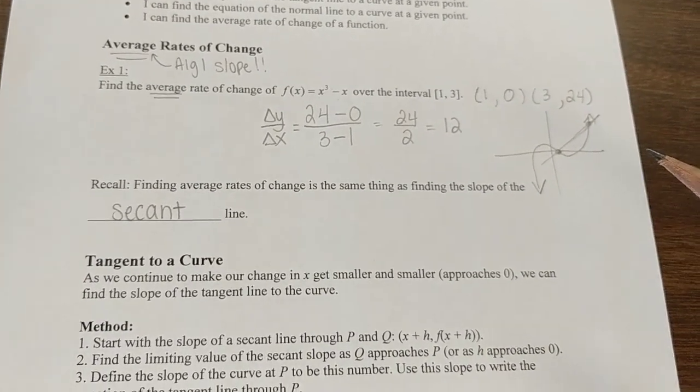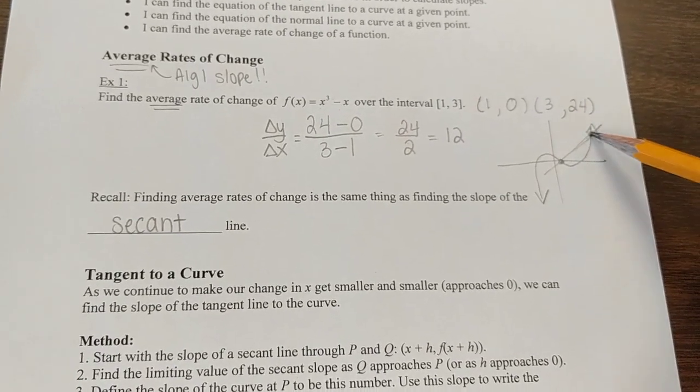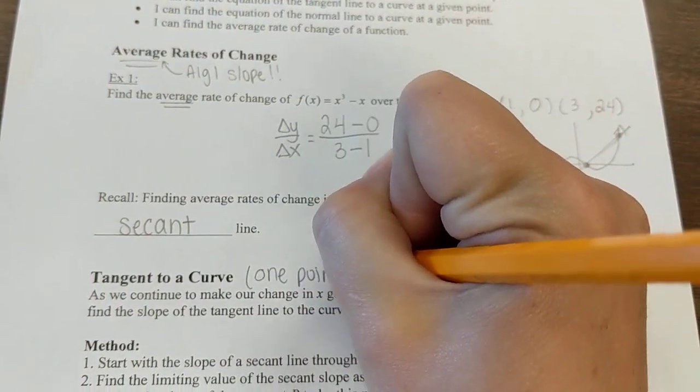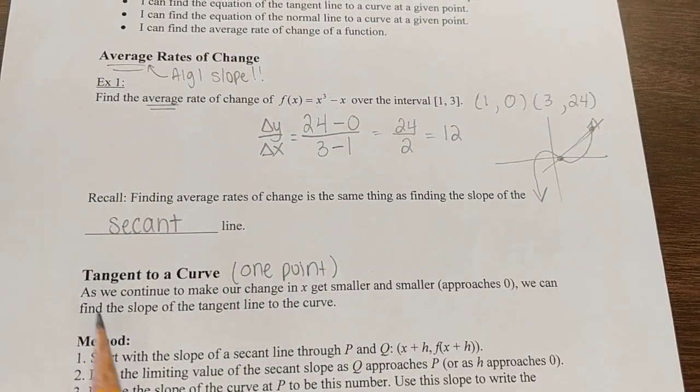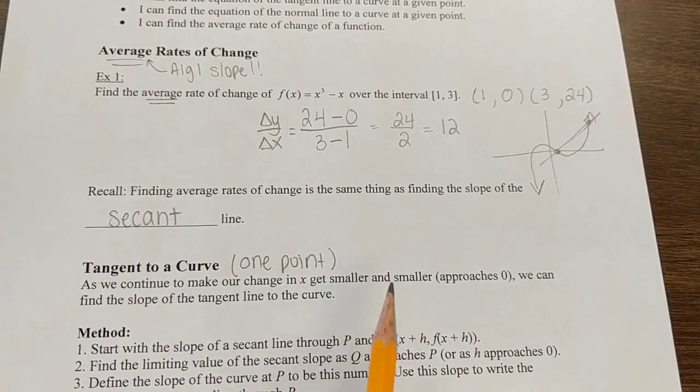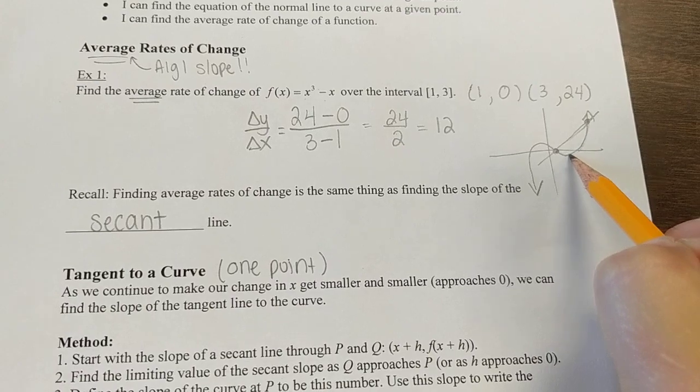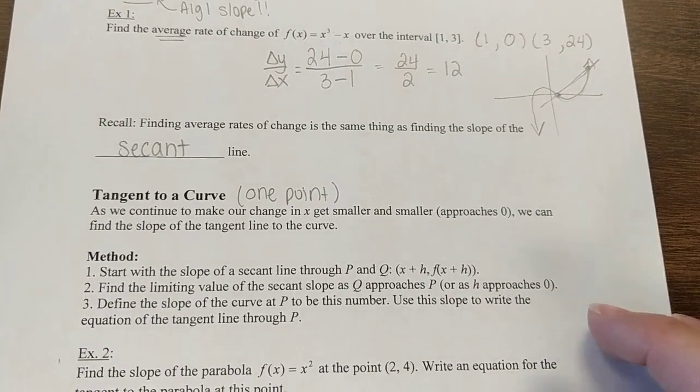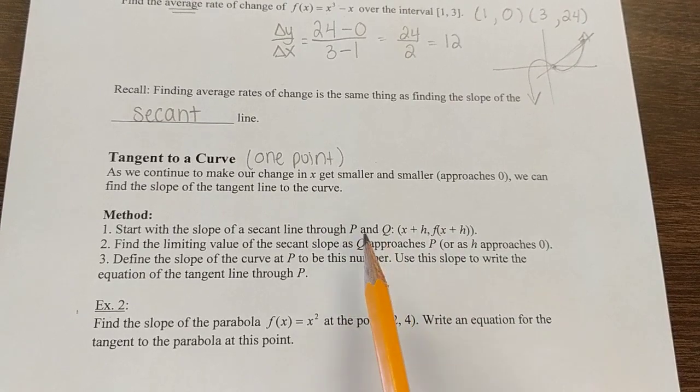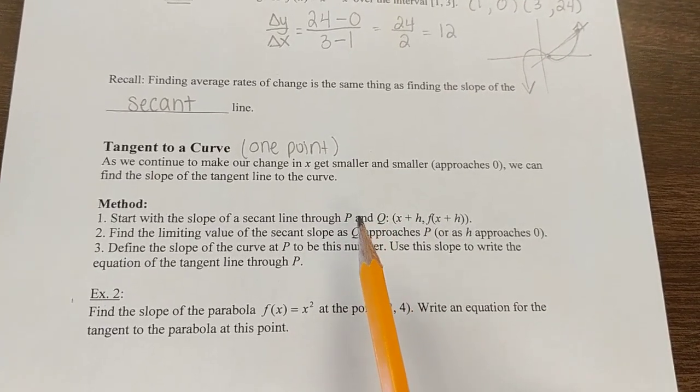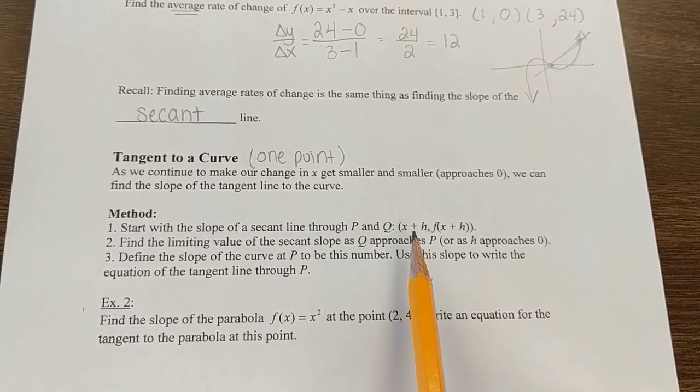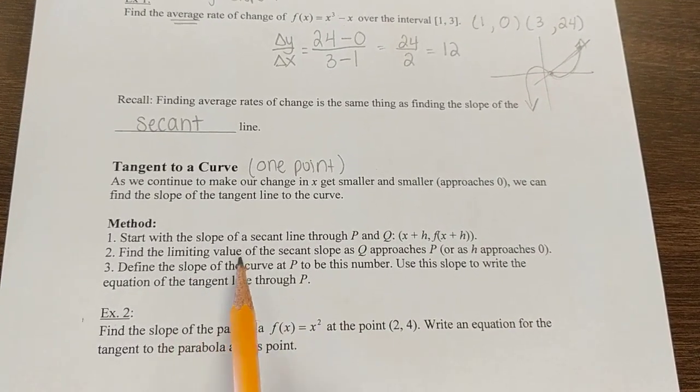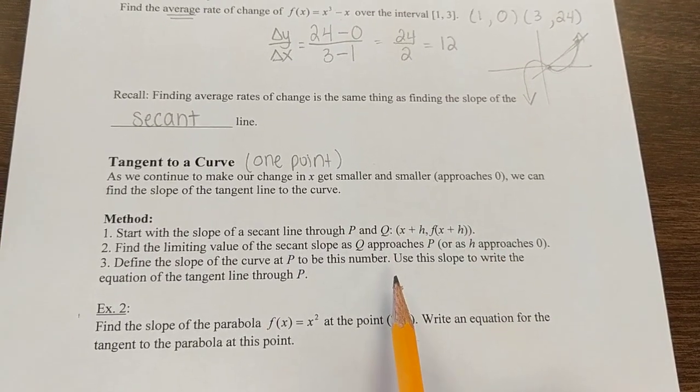When we want to talk about tangent to a curve, we want to talk about how to find the slope at just this point. We're talking the slope at one point, no longer two points in average rates of change. As we continue to make our change in x get smaller and smaller, or approach 0, if I move this point closer until it gets right on top of this point, we can find the slope of that tangent to the curve. We do it the same way we did average rate of change. We still have two ordered pairs, even though we're looking at one point.